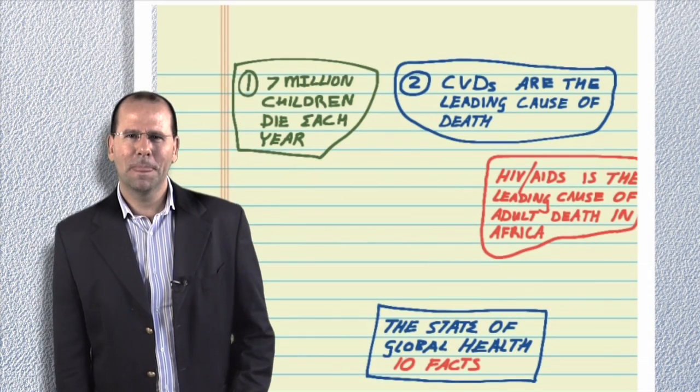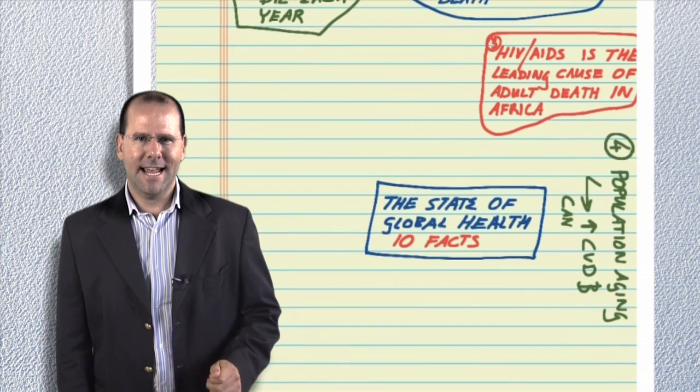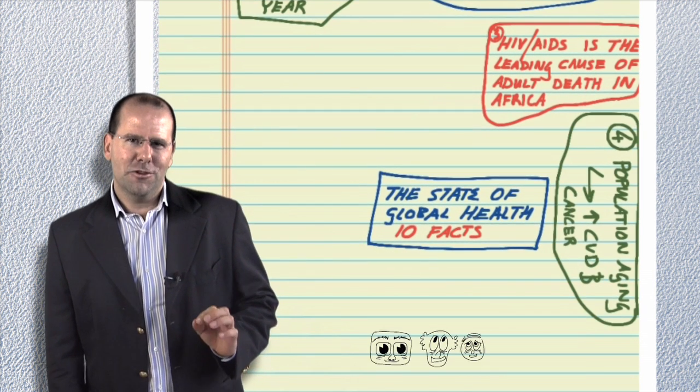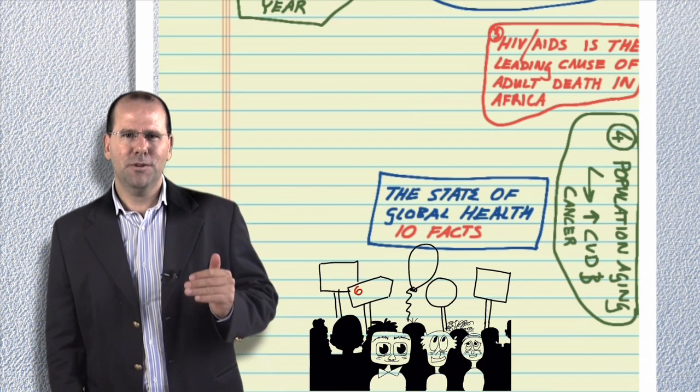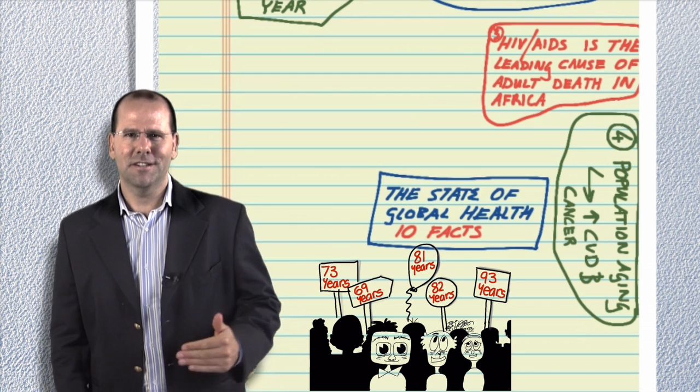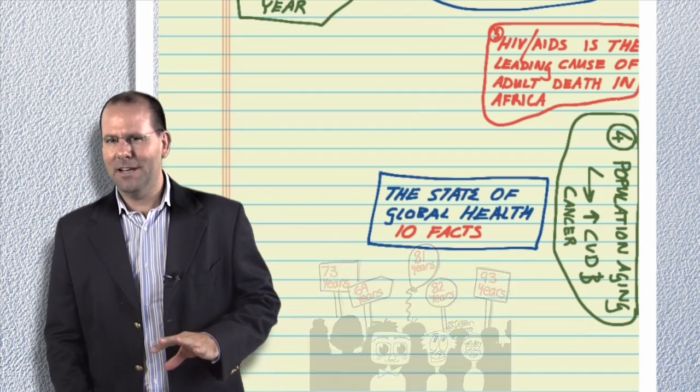Fact number four: population aging is contributing to the rise in cancer and heart disease. The increased proportion of older people in the global population is contributing to an increase in age-associated chronic diseases, particularly in developing countries.